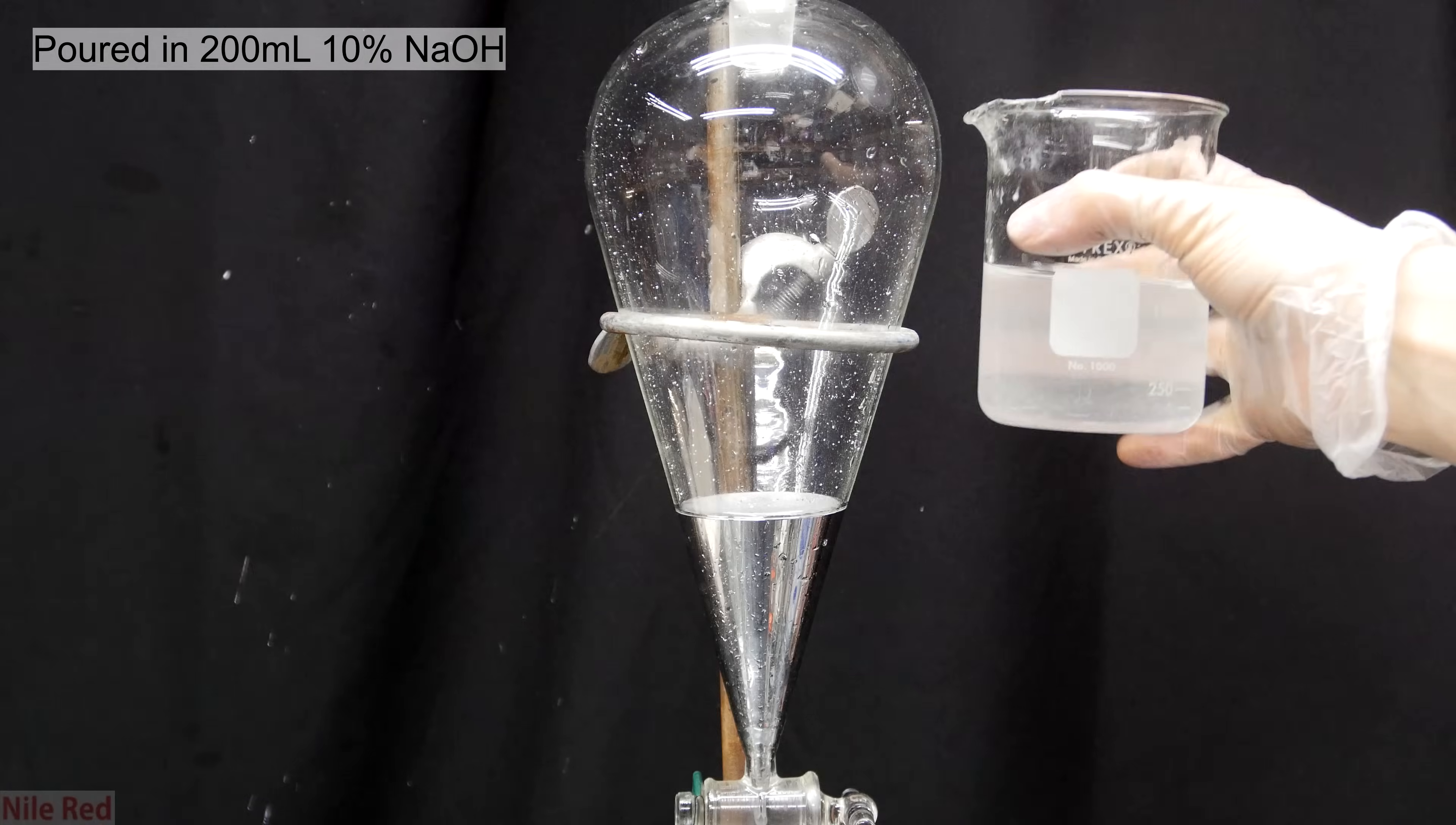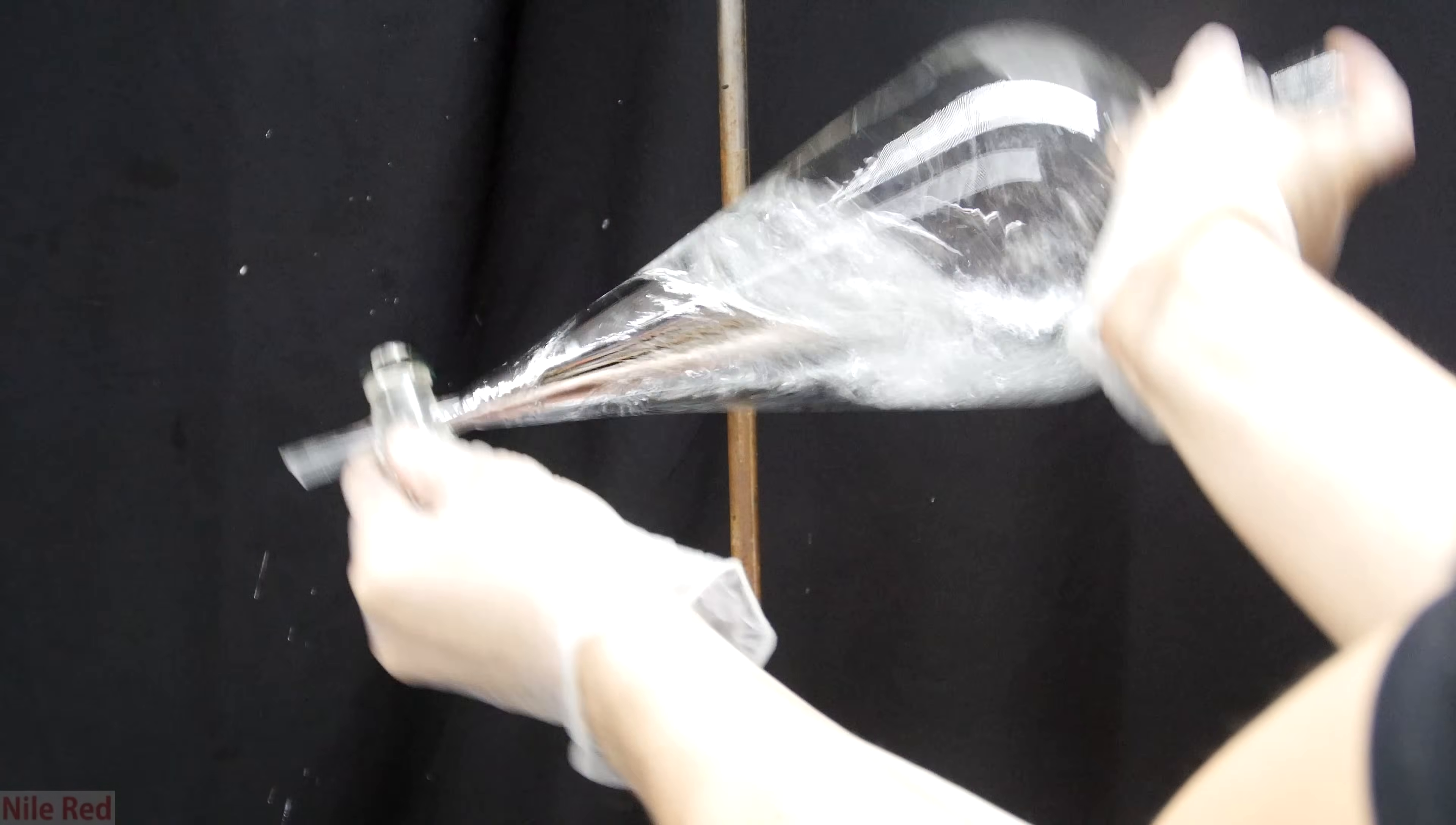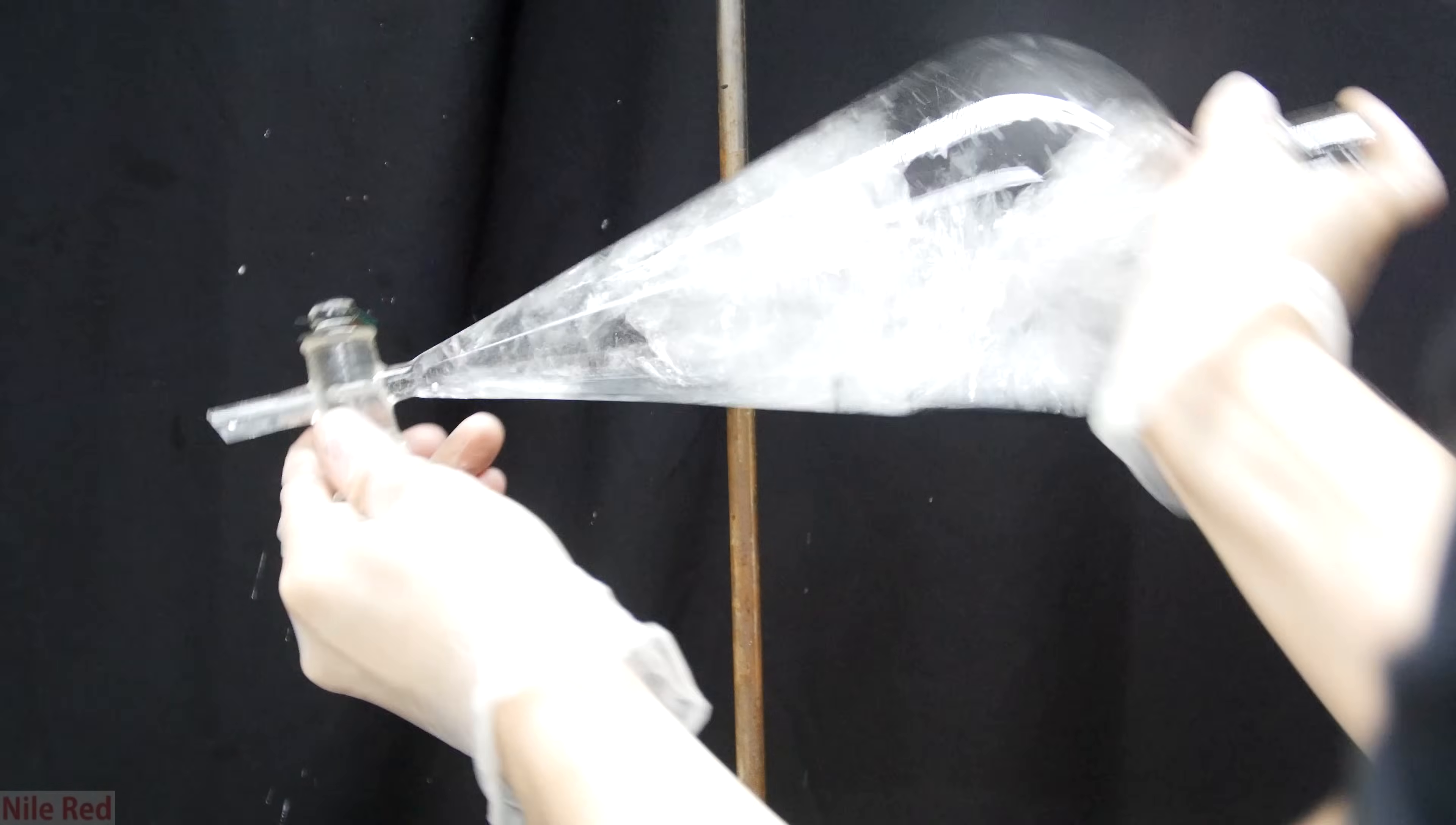I then pour in 200 milliliters of a 10% sodium hydroxide solution. This was made approximately by putting about 20 grams of sodium hydroxide into a beaker and then topping it off to about 200 milliliters with distilled water. The separatory funnel is removed from the stand and it's shaken vigorously. It's also vented occasionally by opening the stopcock at the front to let out any pressure that might build up. This basic sodium hydroxide solution will help wash out the oil from the mercury.